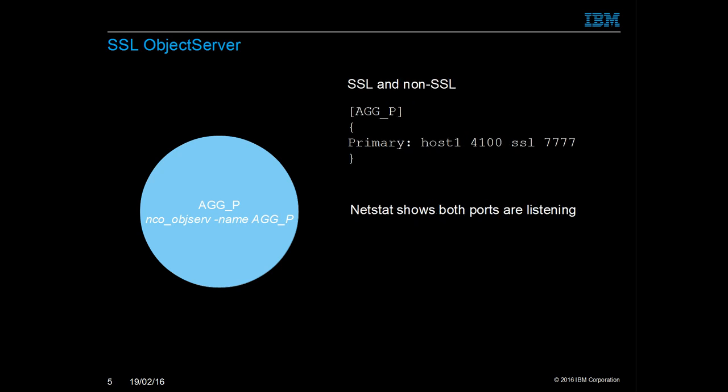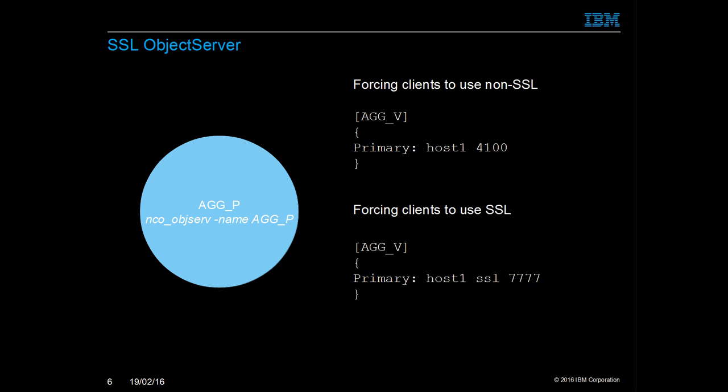If you define the non-SSL port and the SSL port, then both ports listen. The risk is that the connection may also be non-SSL. Therefore, always define only the SSL port when SSL is required. If you need to use both, you can force clients to access one or the other. If necessary, create secondary names for SSL and non-SSL object server definitions.